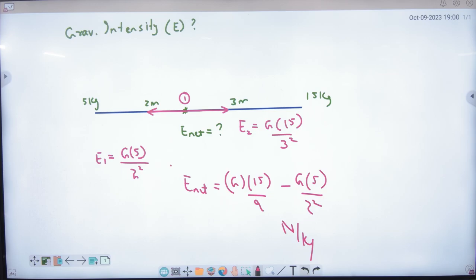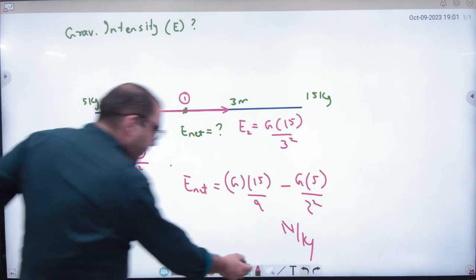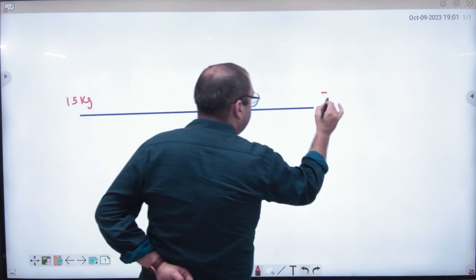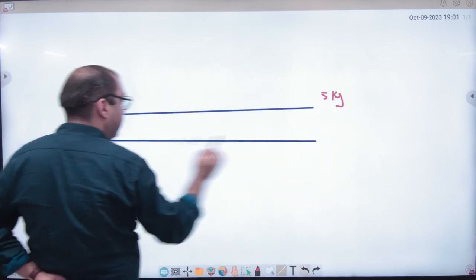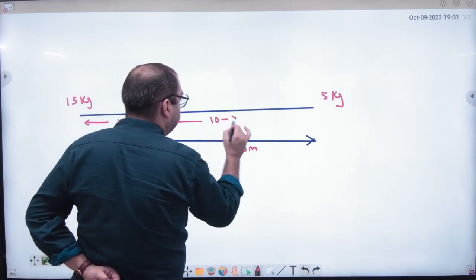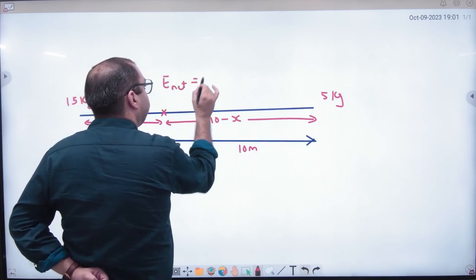Point number one clear. How to calculate net e value? First example was of force, solved with vectors only. Second example of E, solved with vectors only. So this point is clear. Next problem in this category comes like this. Suppose 15 kg mass, 5 kg mass, between them distance he will give you, assume distance value is 10 meter. He will ask tell me such a point X where net e value becomes what? Zero. Now instead of force, net e becomes zero.